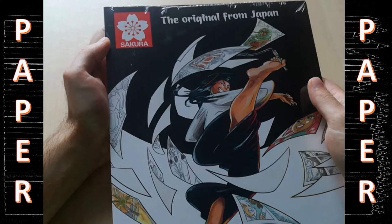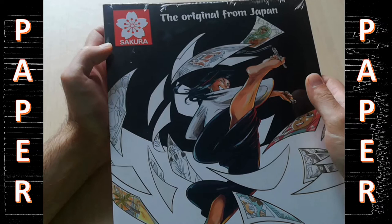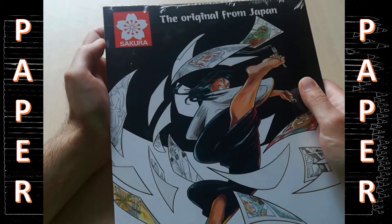Alright, first of all, here is the paper that I bought. It's the Sakura Manga Paper A4 drawing pad. These are some nice and thick sheets with a weight of 250 grams per square meter so they should be ideal for drawing tools such as ink, technical pens, markers and colored pencils.